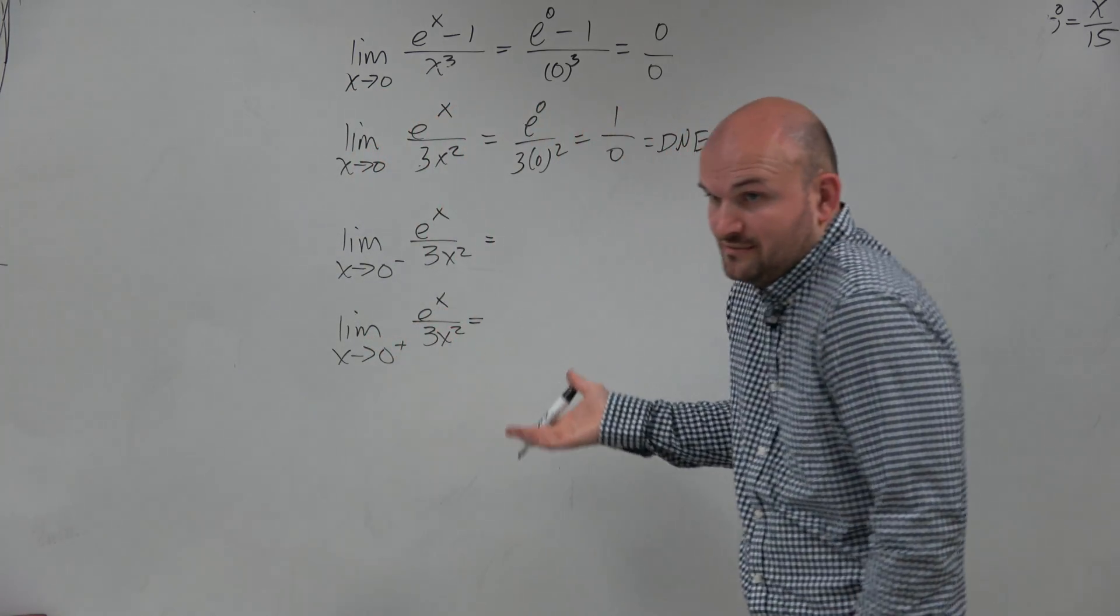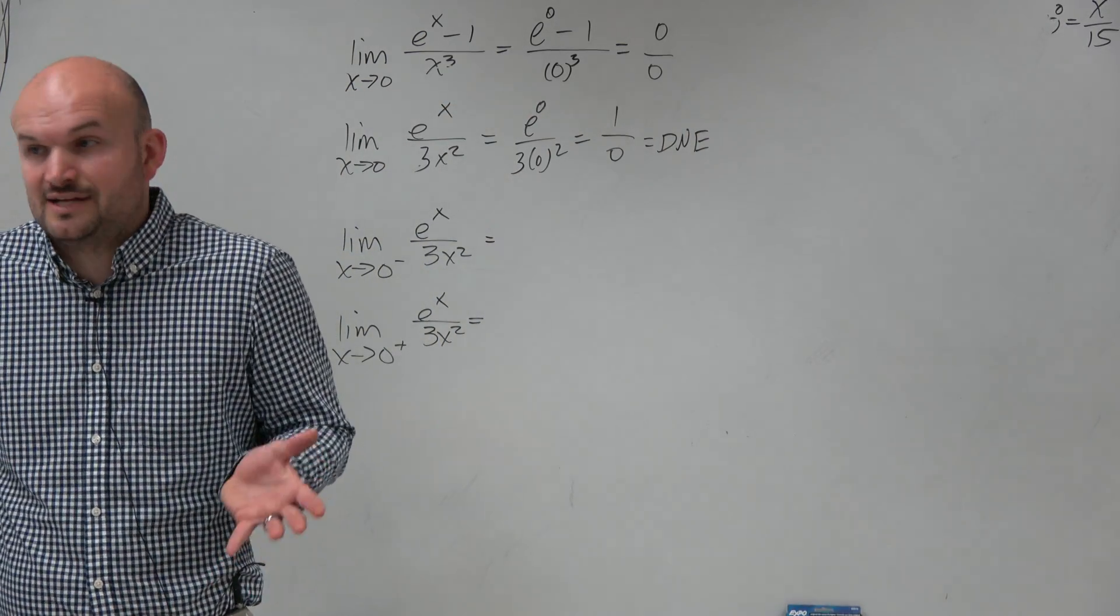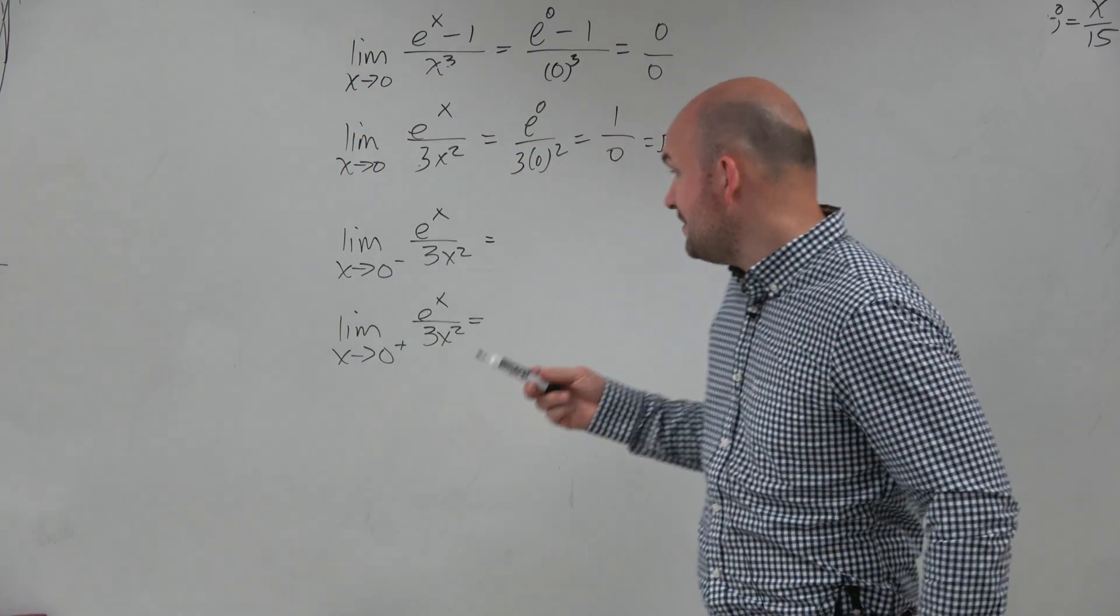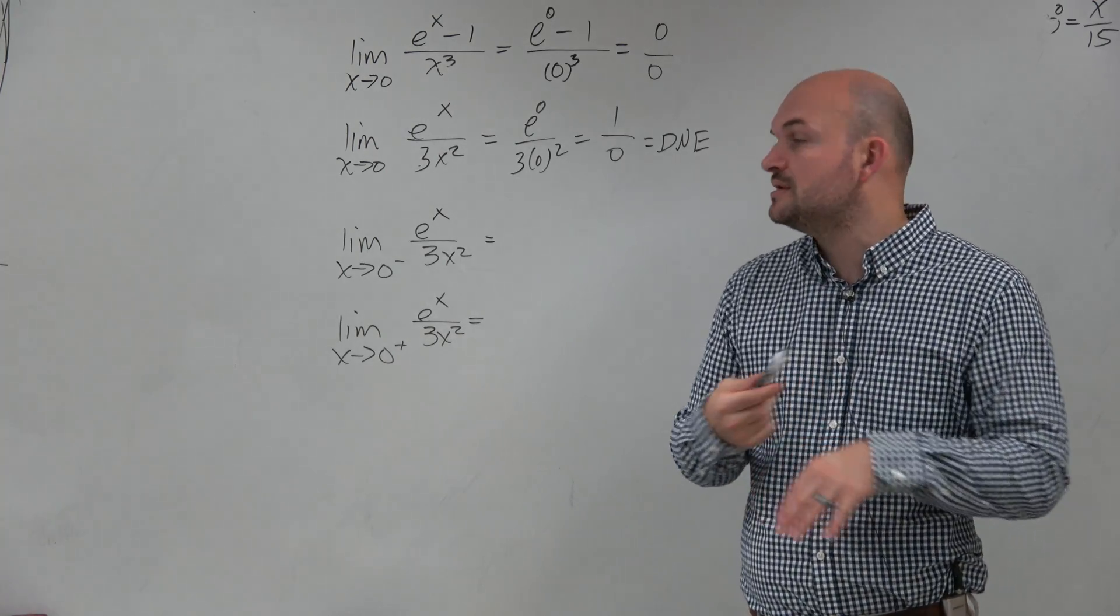It does not exist is a perfectly fine answer, but what if on the answer choices, it's more specific—it's negative infinity or positive infinity. That means we need to kind of see what's happening from the behavior from the left and from the right.